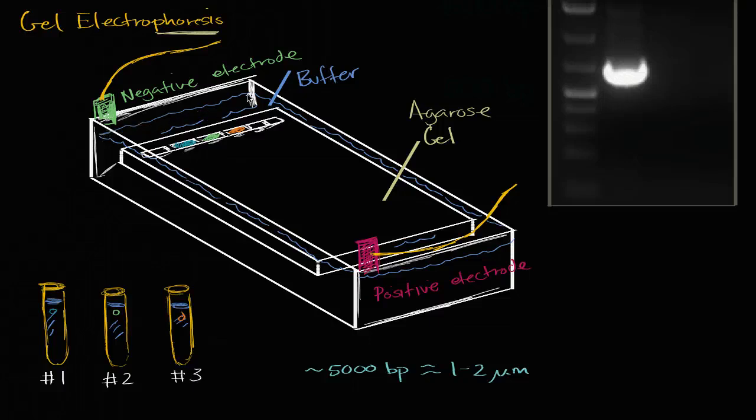It's going to be bathed inside this buffer. And that's really just water with some salts in it. And the buffer is going to keep the pH from going too far out of bounds as we place a charge across this entire thing. Because if the pH gets too far in the basic or acidic side, it might actually affect the DNA or affect the charge on the DNA. And what we're going to do is put a charge across this whole setup.